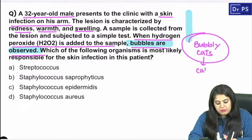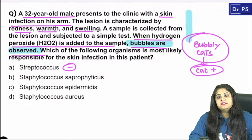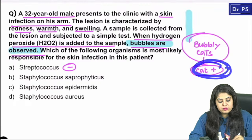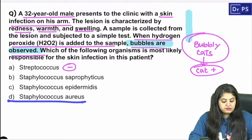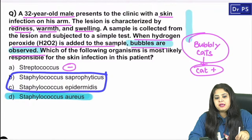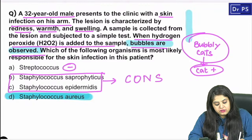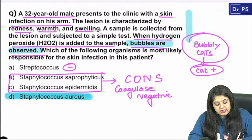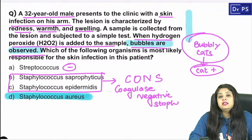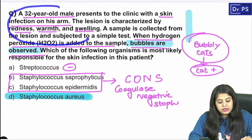Bubbles from hydrogen peroxide indicate catalase positive — remember as 'bubbly cats.' Streptococcus is catalase negative; the catalase positive family is Staphylococcus. With a clinical picture of skin and soft tissue infection, the most likely organism is Staphylococcus aureus — not coagulase-negative staph like epidermidis or saprophyticus.